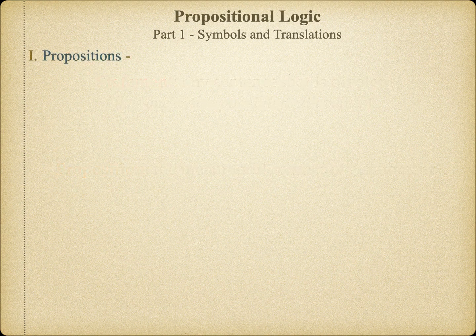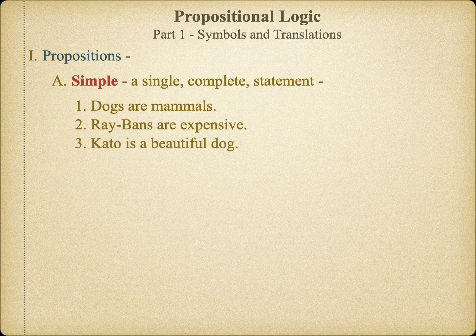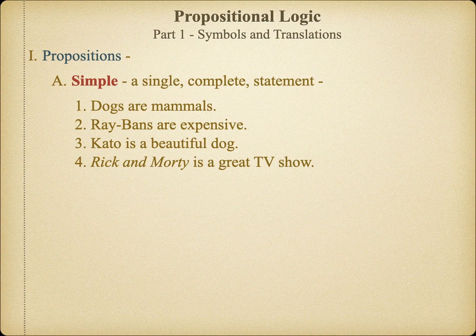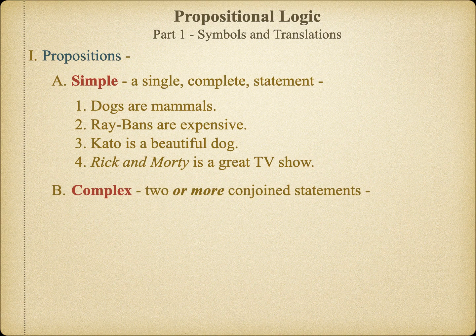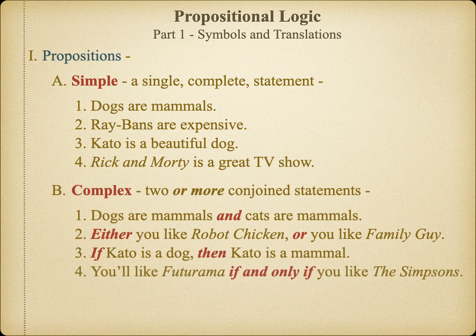The first thing we have to learn is to recognize simple propositions. Here are some examples: Dogs are mammals. Ray-Bans are expensive. Cato is a beautiful dog. Rick and Morty is a great TV show. Note that each one is a complete statement that can be assigned a truth value — each can be either true or false. But in ordinary language arguments, we might also find complex statements expressing a compound of two or more statements. Note the words and phrases in red. These serve as connectors, which we're going to call logical operators, joining two simple statements together to form a complex proposition.